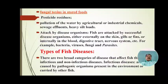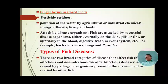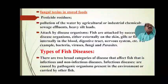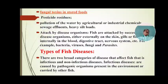Bacteria, virus, fungi, and parasites can affect the blood, digestive tract, nervous system, and other parts of the fish body. With food, some toxins enter the body and affect the nervous system, causing fish to show abnormal behavior. Fishes become infected and affected due to these parasites, which are stored as fungal toxins in fish food.